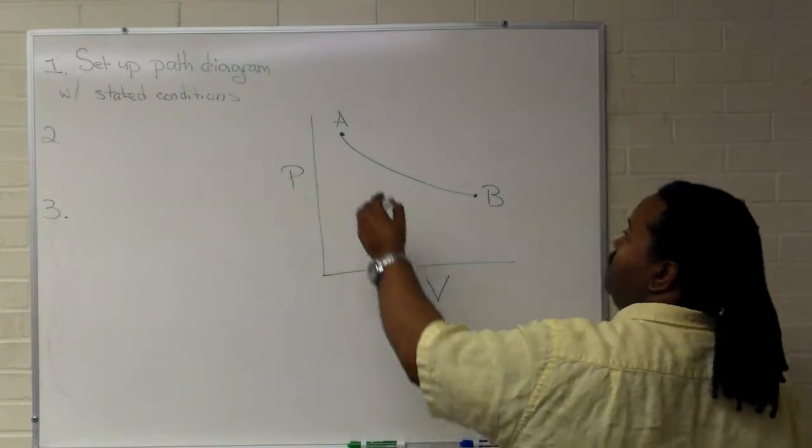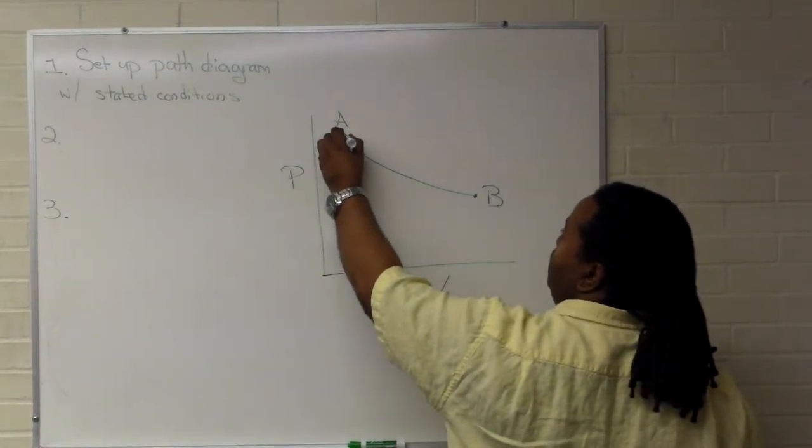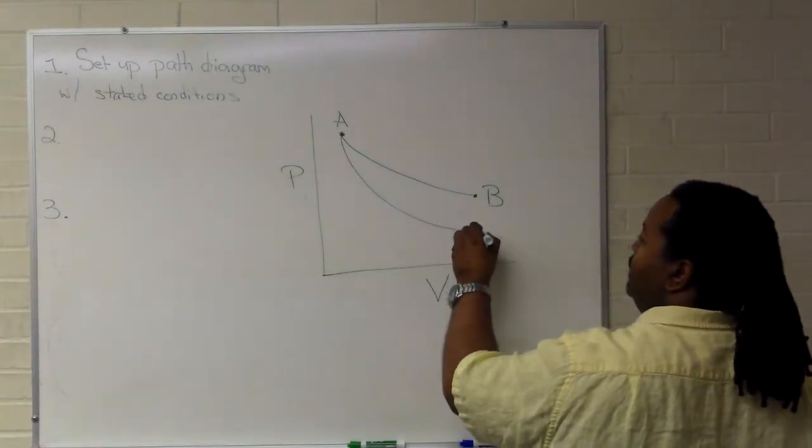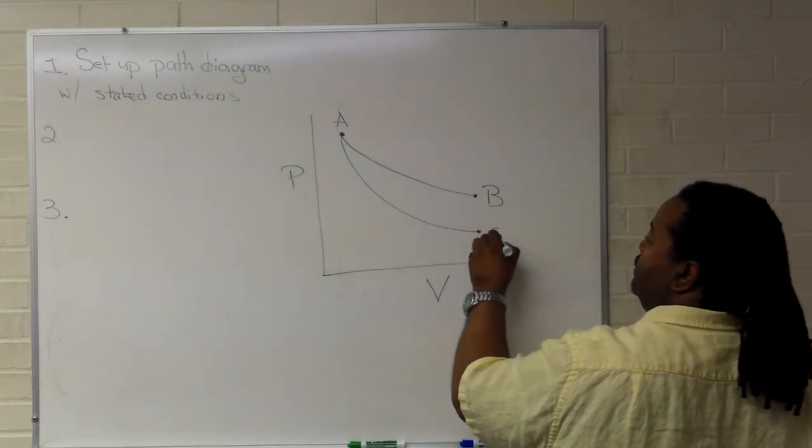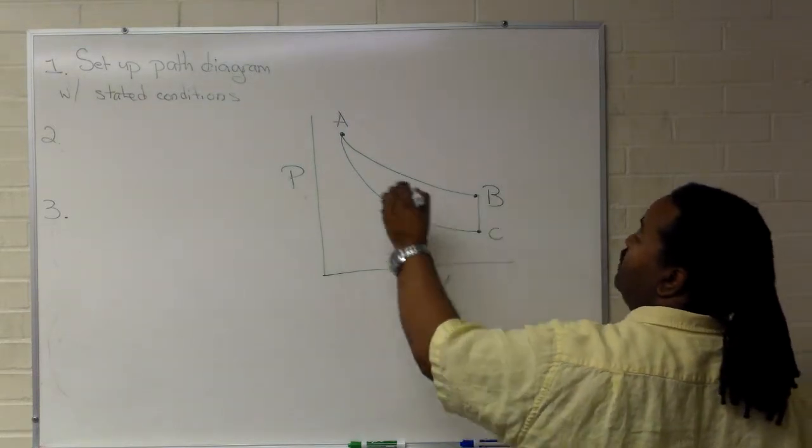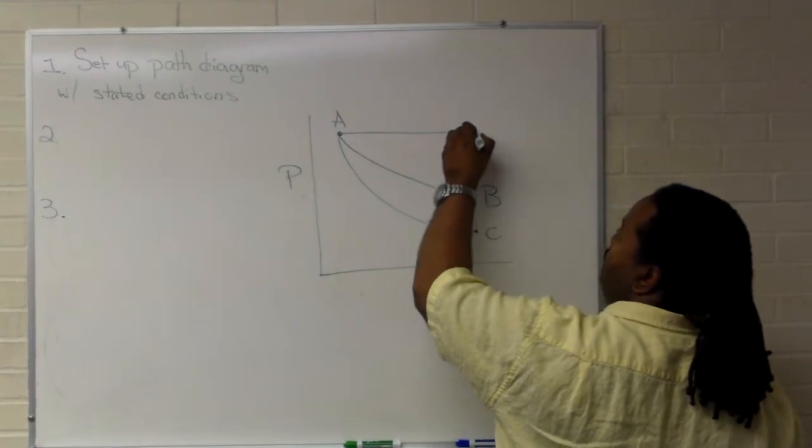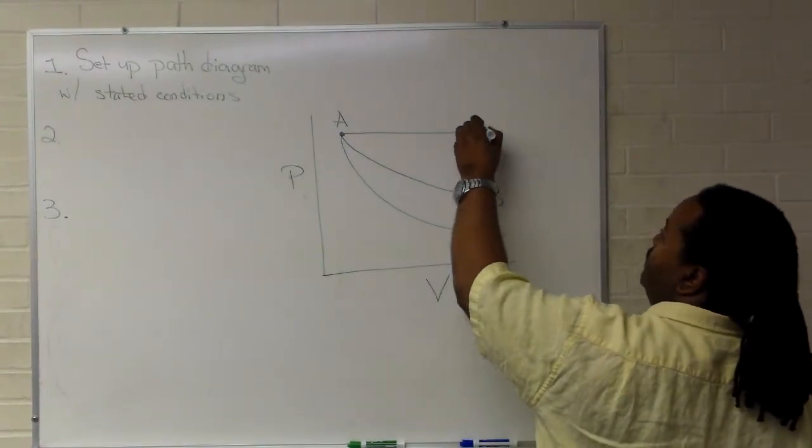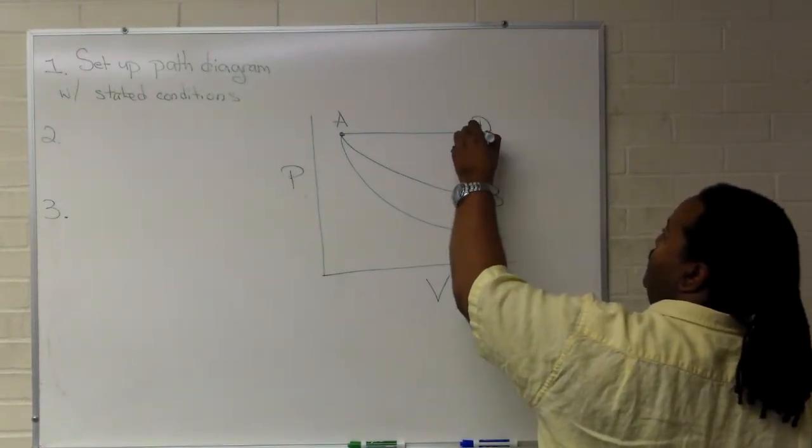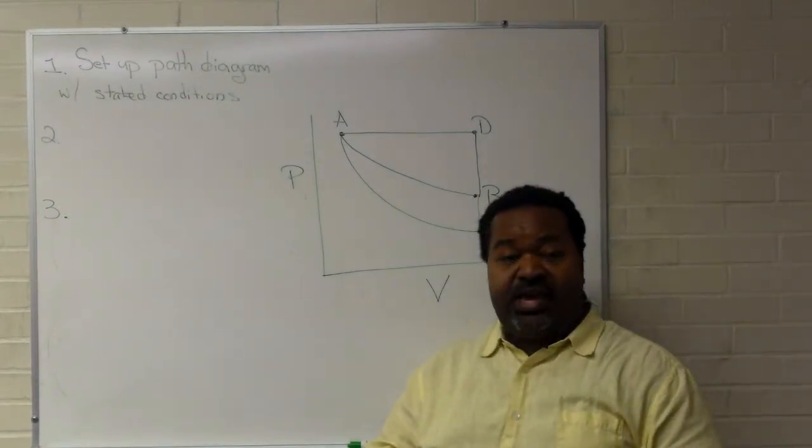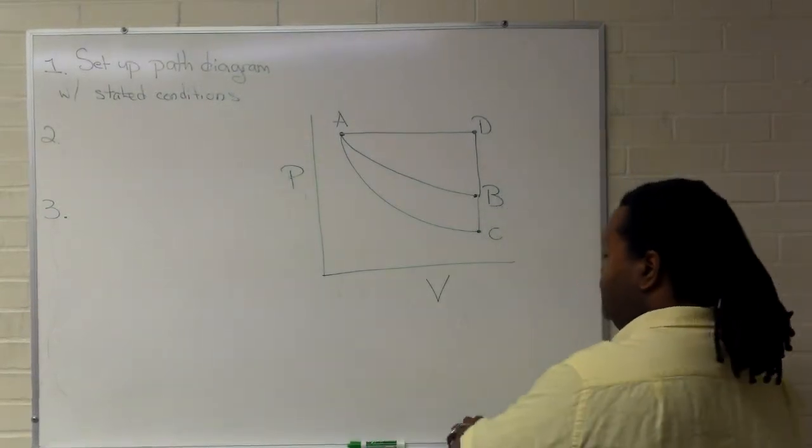The next thing you will do is start defining other paths. So let's have one that drops down here, goes to C and then B. And we'll have another one here and here. So that point will be D. Now at this point you have your different paths.